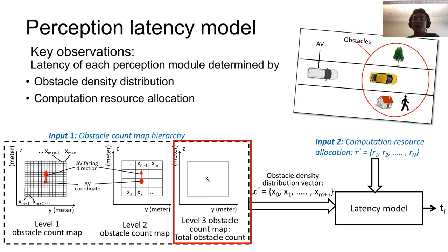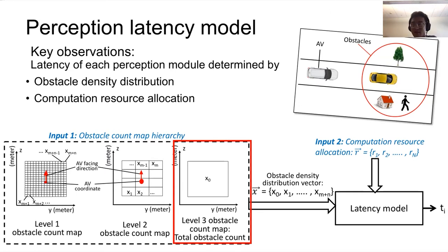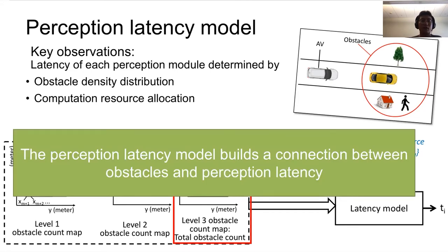With these three obstacle count maps, we get an obstacle density distribution representing the distribution and density of surrounding obstacles. We also get a computation resource allocation vector specifying which algorithm model runs on GPU or CPU. With these two inputs to the latency model, we use a simple linear regression method to train the model. When we want to use this latency model, we input a specific obstacle distribution vector and the model tells us how long the perception latency will be.